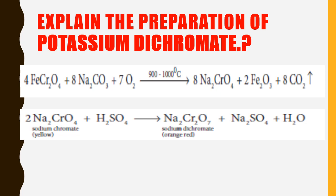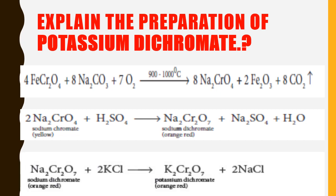Sodium dichromate color is orange-red crystal. The by-products are sodium sulfate and water, which are not required. The second equation's main product is sodium dichromate. From sodium dichromate, we can prepare potassium dichromate in the third equation.